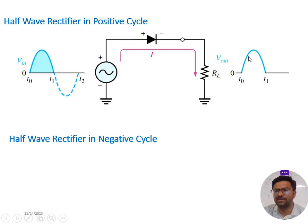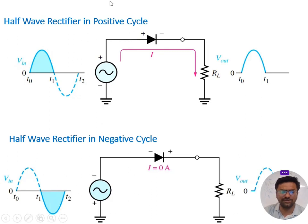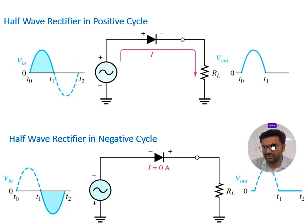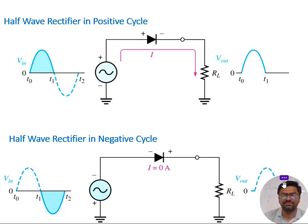During the negative cycle, from t1 to t2, the diode goes to the off condition. As a result, current I equals zero, meaning no current flows in the circuitry. Therefore, the output voltage across RL goes to zero. You can observe that from t1 to t2 the output voltage is zero during the negative cycle.